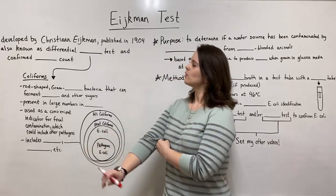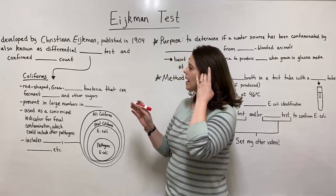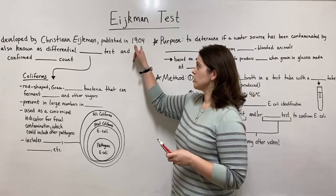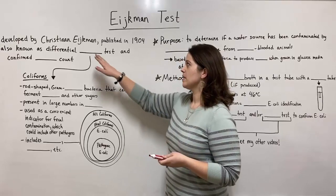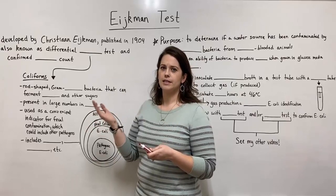This is actually a really old test. It was developed by a Dutch professor named Christiaan Eijkman. It was originally published in 1904, and the original publication was in German. Christiaan Eijkman eventually went on to win the Nobel Prize with another scientist for his contribution to the discovery of vitamins. So that's kind of your fun fact for today.